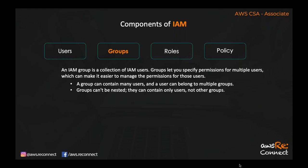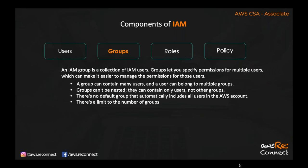Groups cannot be nested — they can contain only users, not other groups. There is no default group available. Every user in your AWS account is part of the AWS account itself, not a default group. The maximum number of groups you can create is 300, though there are limitations on how many groups a user can belong to.